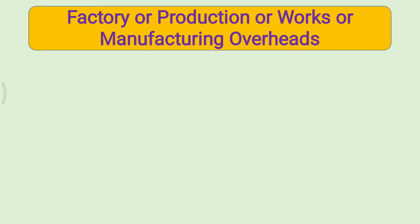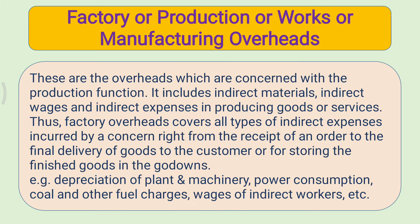The first type is factory, production, works, or manufacturing overheads. These are the overheads which are concerned with the production function. It includes indirect materials, indirect wages and indirect expenses in producing goods or services. Factory overheads covers all types of indirect expenses incurred by a concern right from the receipt of an order to the final delivery of goods to the customers or for storing the finished goods in the go-down.